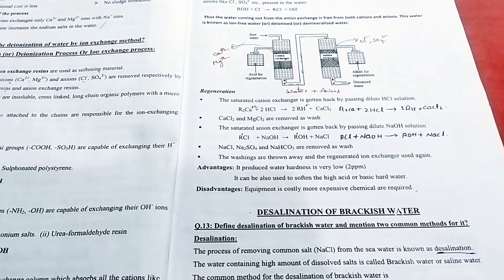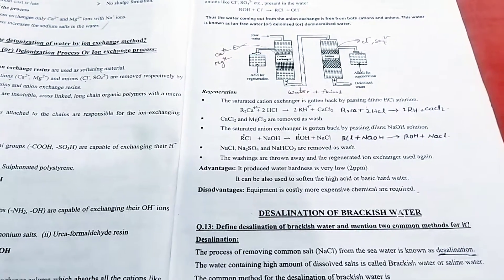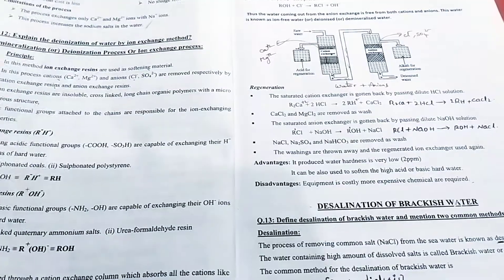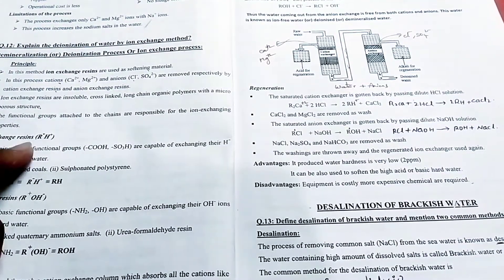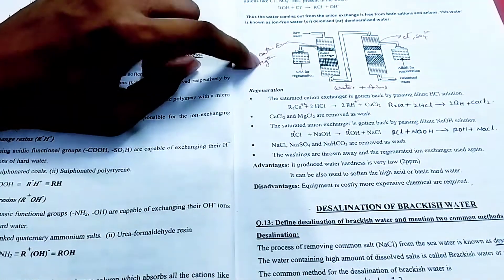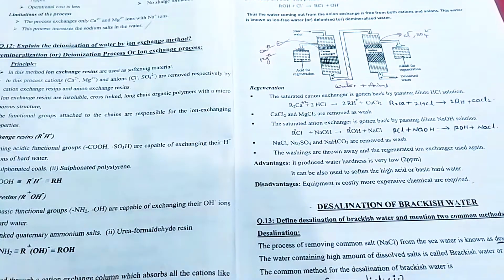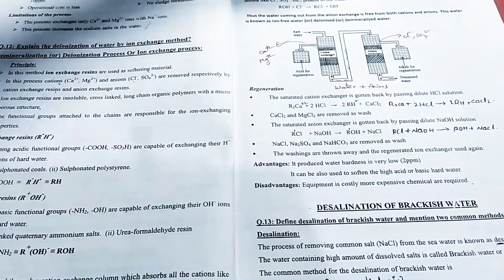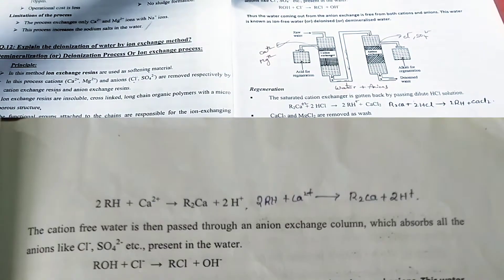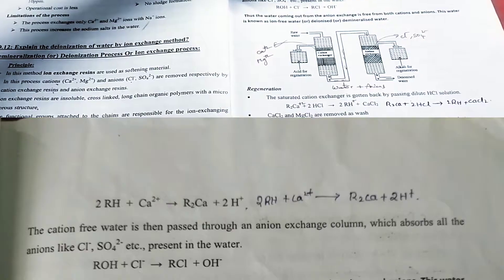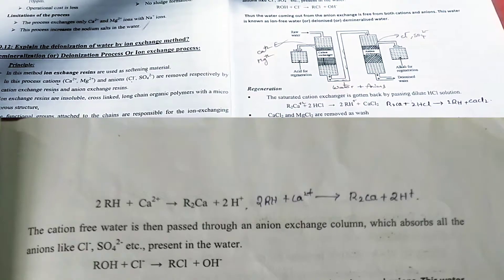It is a process. Let's explain the equations. Cation exchange resins: if we pump the cations Ca²⁺ and Mg²⁺ into the resin, they are replaced by H⁺ ions.